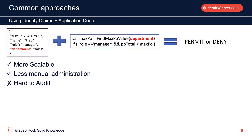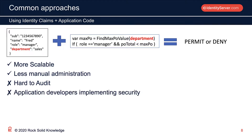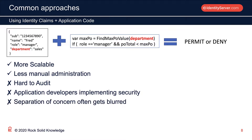But there are downsides. It's hard to audit. The security policy is now embedded inside the application, which requires application developers to implement the security. If there are other interested parties in the organization from a compliance perspective who need to know what the security policy is and make sure it's implemented correctly, it's going to be difficult — it's a communication issue between the application developers and the compliance team. This is often made worse when application developers don't properly separate concerns between application logic and security logic.